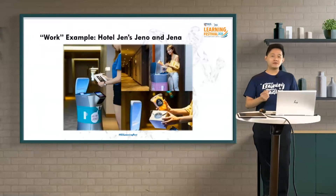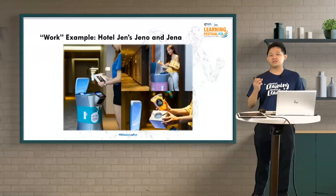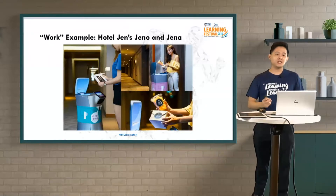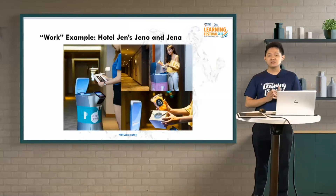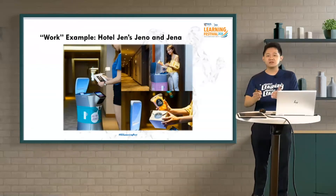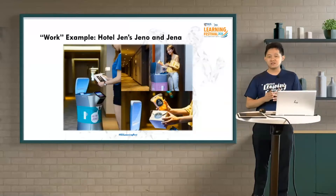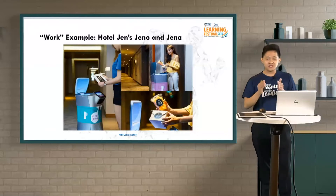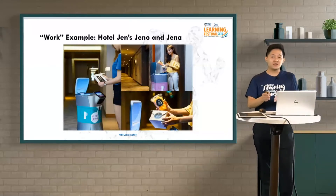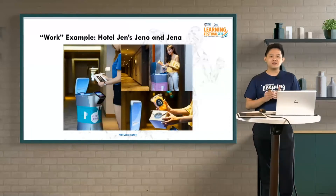For the work spectrum, if you have the chance to go on vacation at Hotel Jen, please take note of these two robots — Geno and Gena. Their purpose is to deliver food door-to-door to the customer's hotel room. I have experienced this firsthand — though I have not ordered room service myself, I have seen the robot delivering door-to-door to hotel guests. This is very interesting.